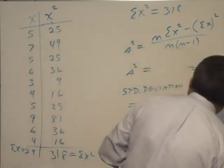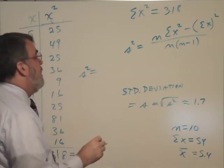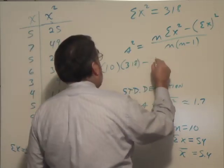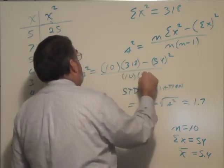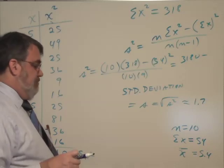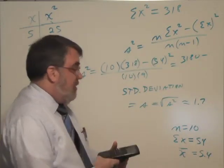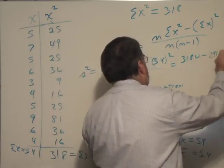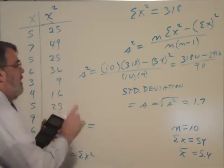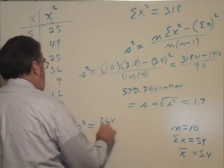Let me make a little more room. So s squared, plug the numbers in, it's going to be 10 times 318 minus 54 squared divided by 10 times 9. And s is 3180 minus 2916. And s squared would be 3180 minus 2916. It's 264 divided by 90.